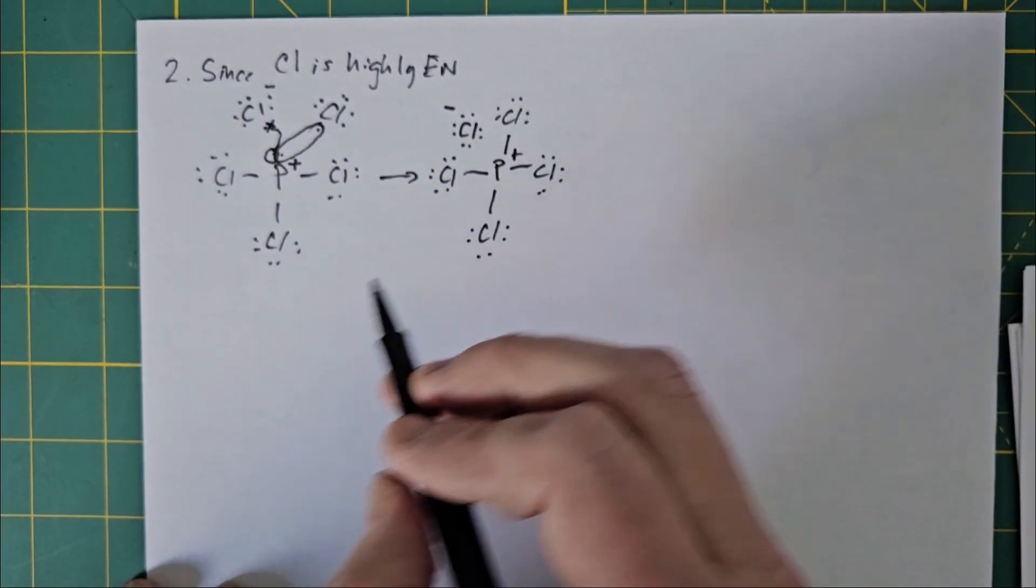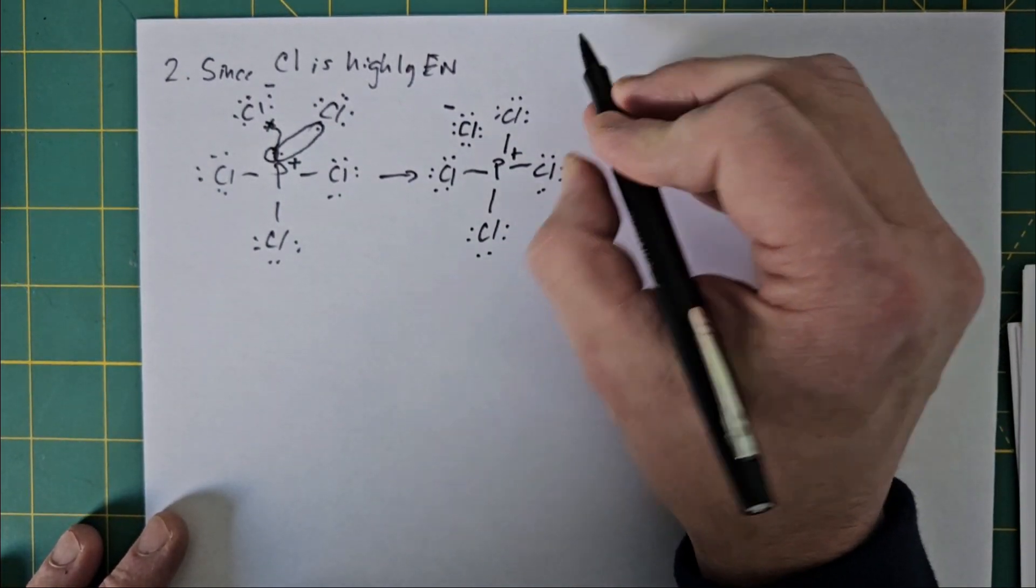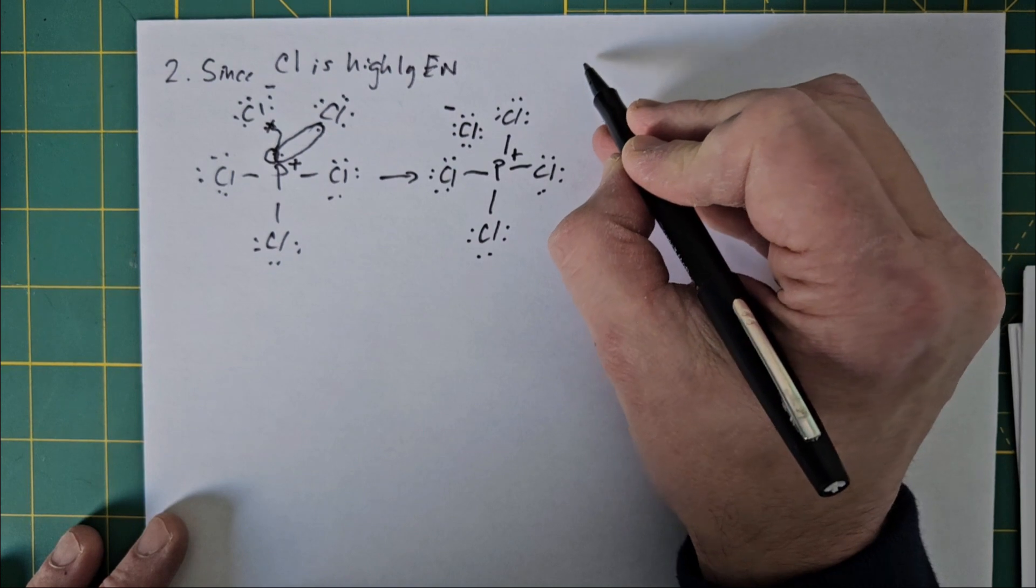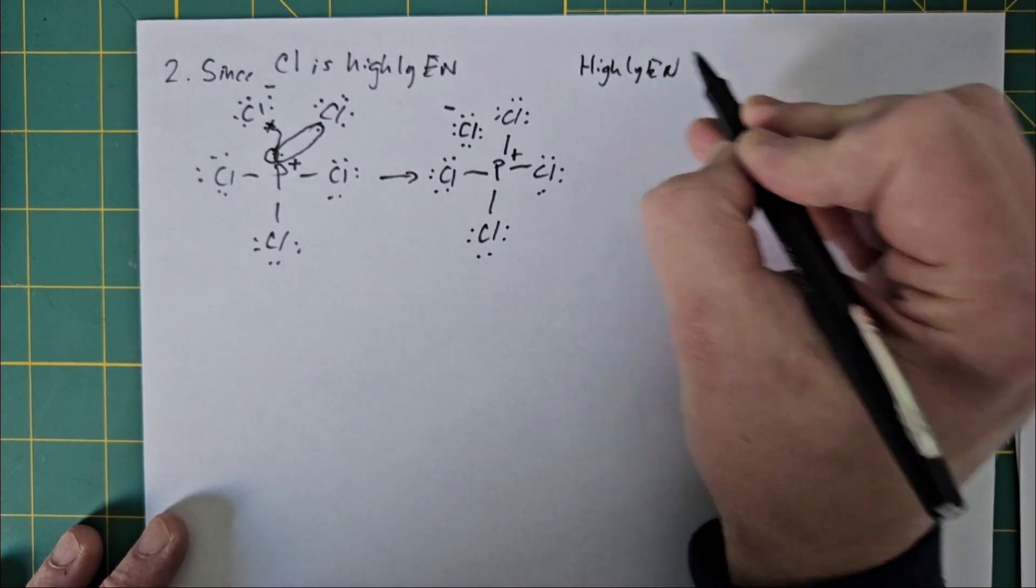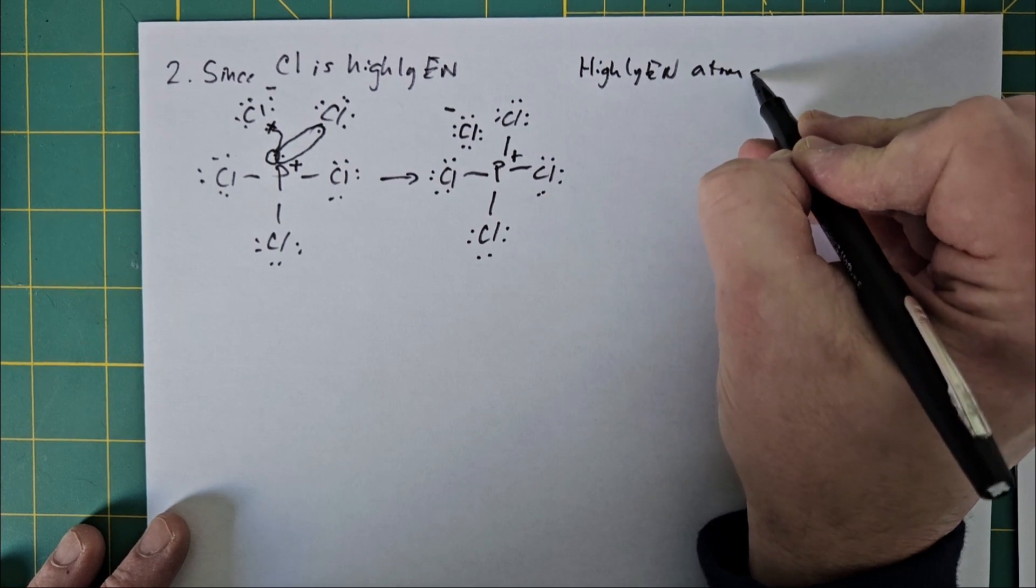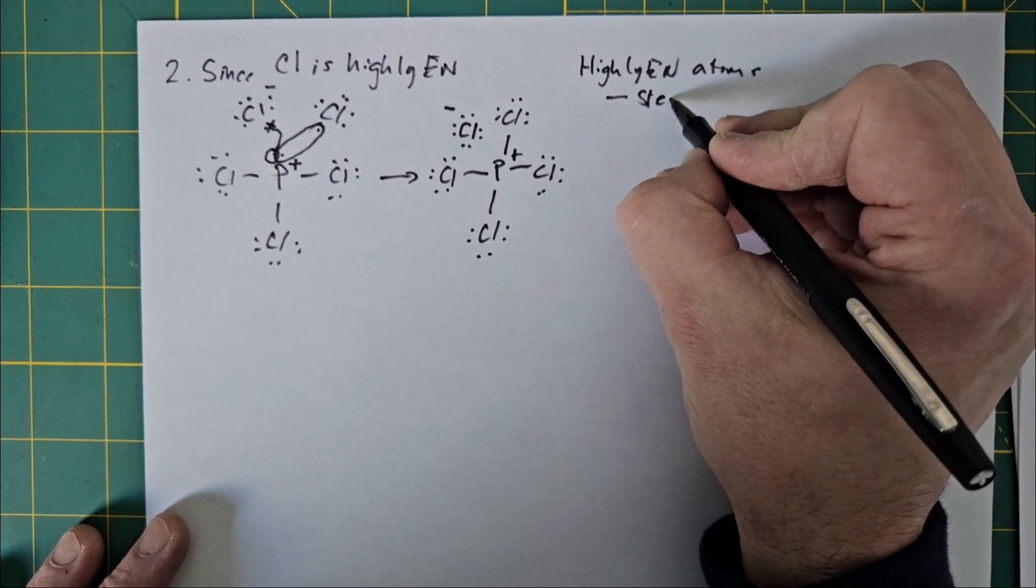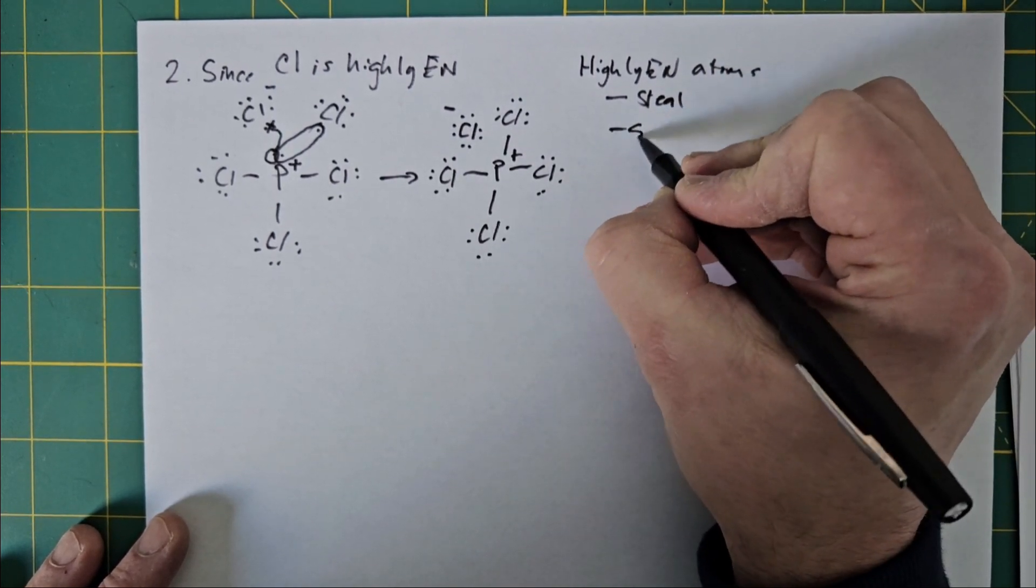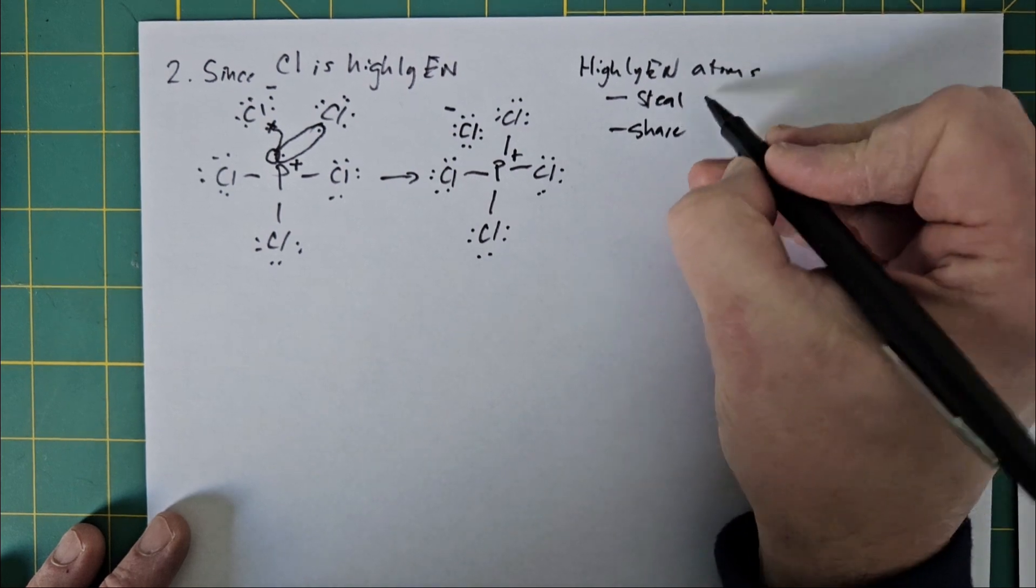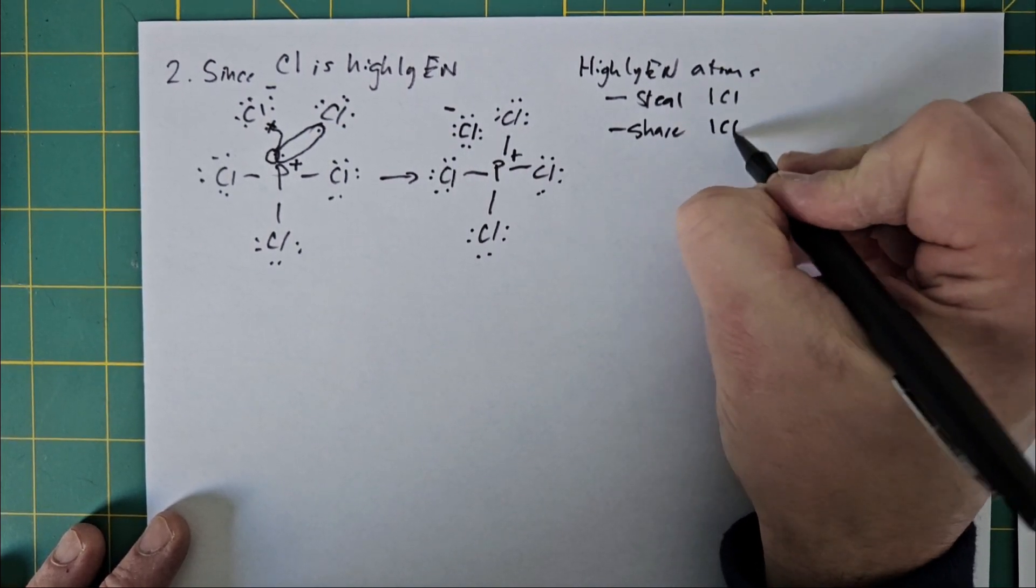So what happens in this explanation is you start off with the highly electronegative atom. They're going to first steal, and then they're going to share. So one chlorine, in this case, is stealing, and one chlorine is sharing.